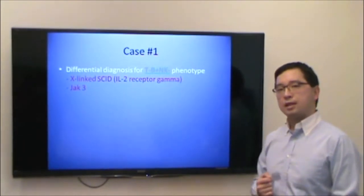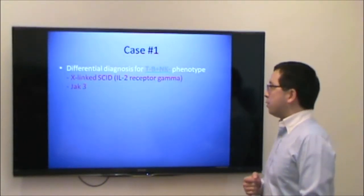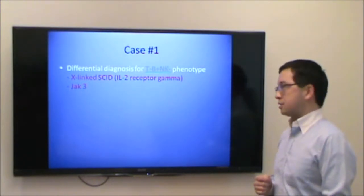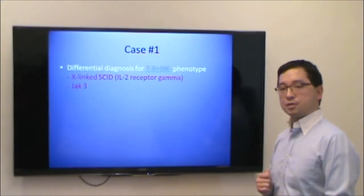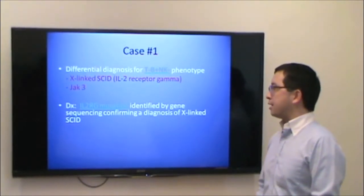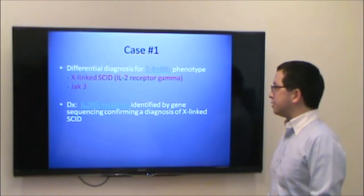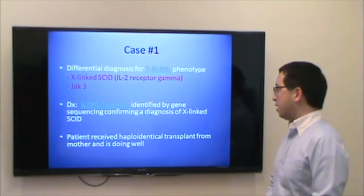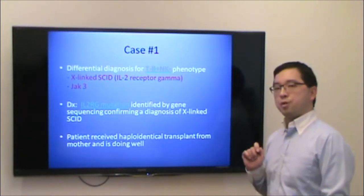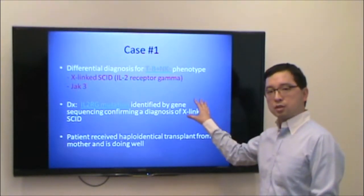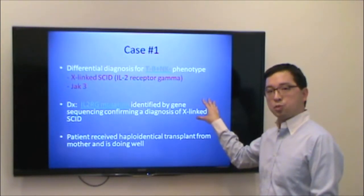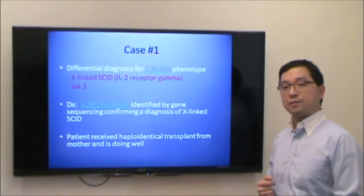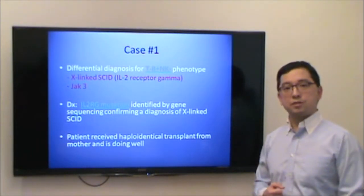For a T-negative, B-positive, NK-negative phenotype, we think of two diagnoses: X-linked severe combined immune deficiency from mutations in the IL-2 receptor gamma, and JAK3 deficiency. This patient was confirmed to have a mutation in the IL-2 receptor gamma by gene sequencing, and was diagnosed with X-linked SCID. He received a haploidentical transplant from his mother and is doing well. Importantly, this mutation confirmation occurred about two months after transplant — we do not wait for genetic confirmation to perform life-saving transplant.